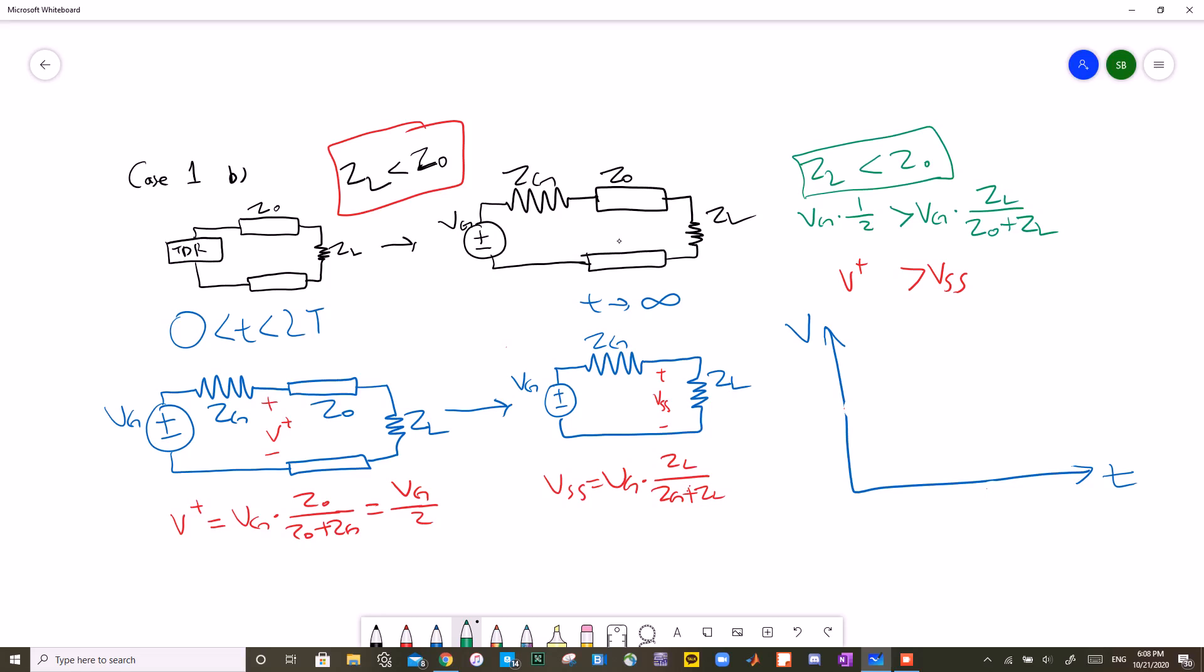This means that ZL over Z0 plus ZL is now smaller than 1 over 2. This means that the incident voltage of the TDR is now bigger than the steady state voltage of the TDR. So we'll again start off with VG over 2, but at 2T it will now decrease down to VG times ZL over Z0 plus ZL, and it continues on like that. So those are the two TDR graphs for the two cases.